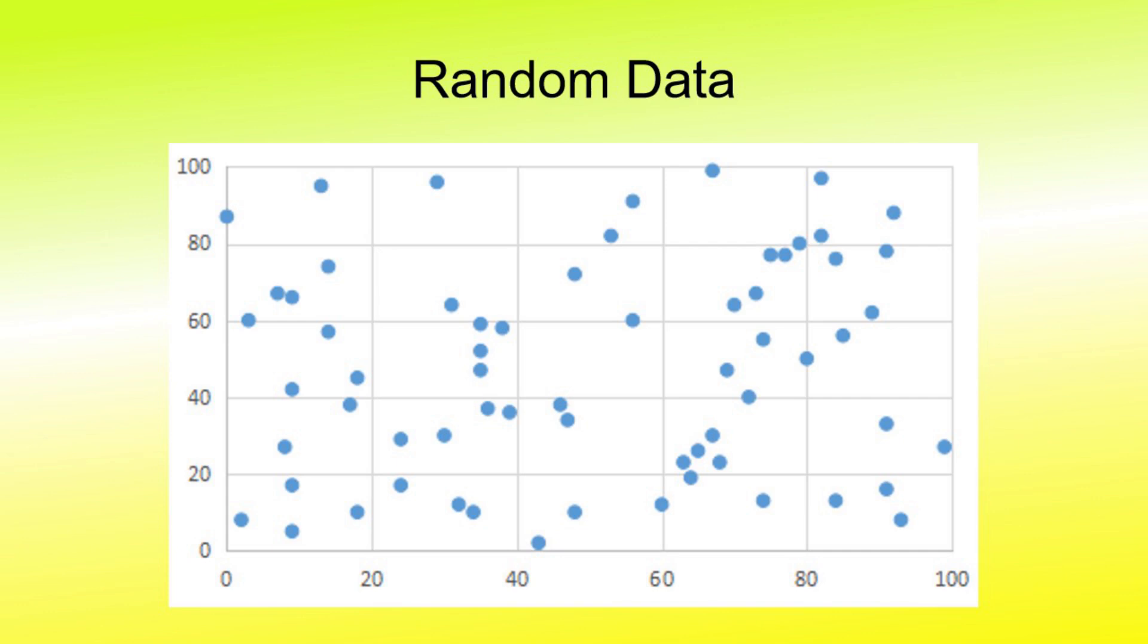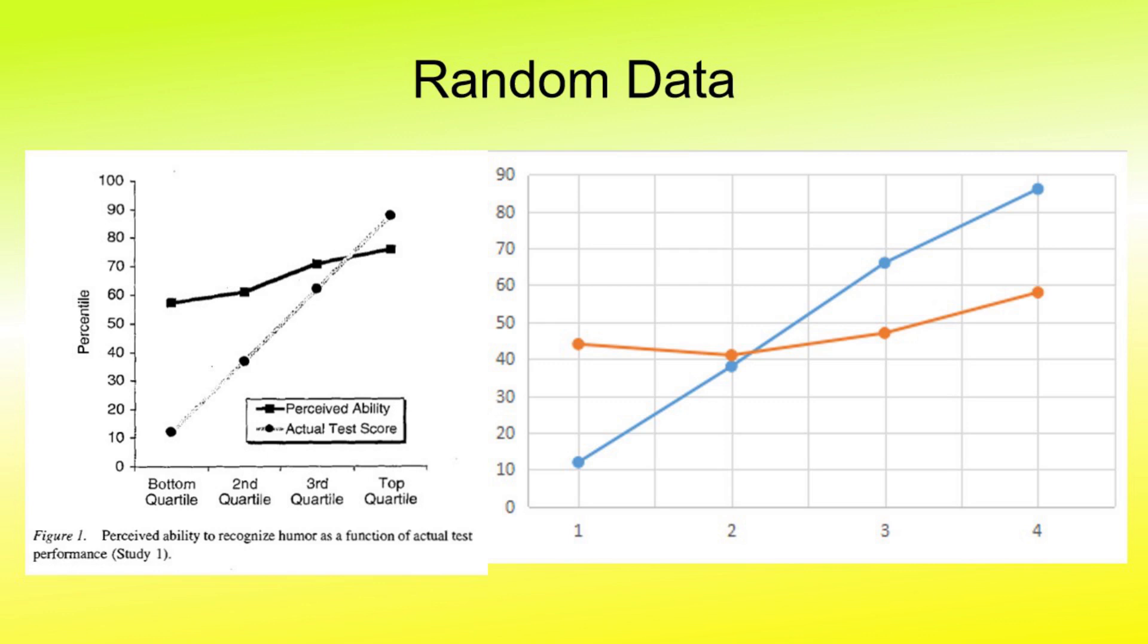This is a chart of random data from 0 to 100. The vertical represents what in Dunning-Kruger would be the perceived, while the horizontal represents what would be the actual. The chart on the right are the results of this data presented the way Dunning and Kruger presented their data. It bears a striking resemblance to their actual data.